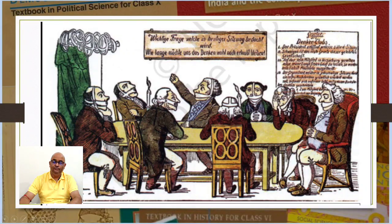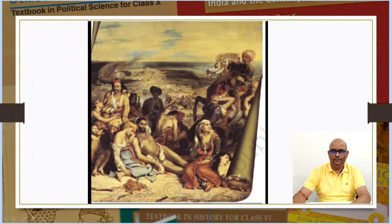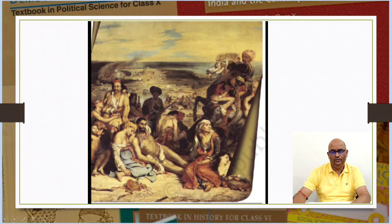Figure 8 is a painting made by Eugene Delacroix called 'The Massacre of Chios.' It depicts an incident in which 20,000 Greeks were said to have been killed by Turks on the island of Chios. Through this painting, the painter sought to appeal to the emotions of spectators and create sympathy for the Greeks.